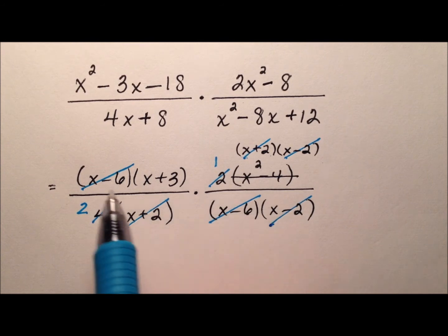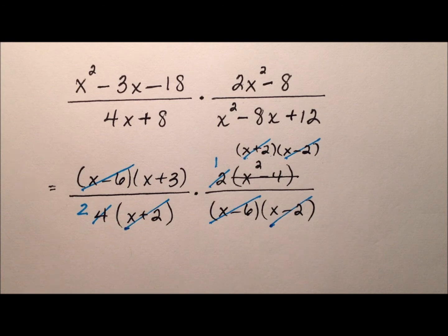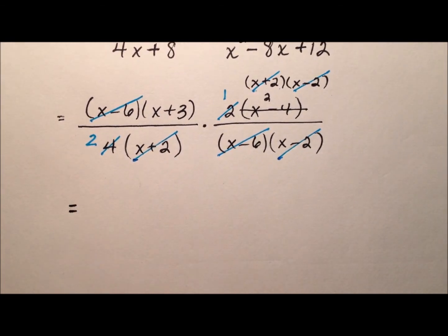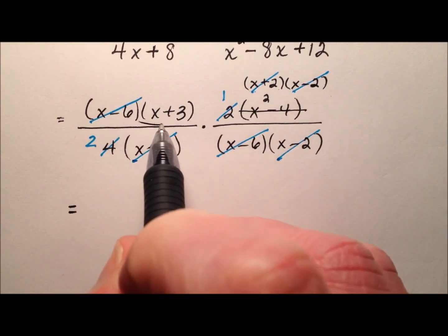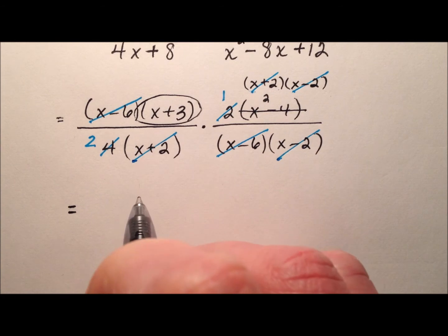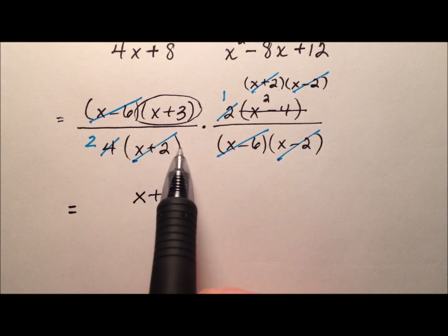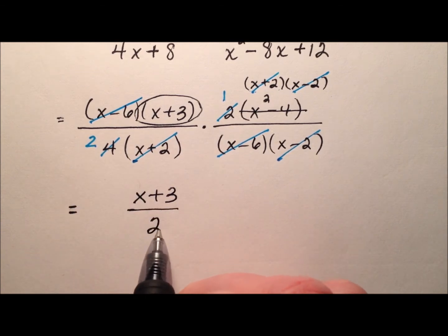So I actually have a lot of factors that canceled out. What do I have now when I go to multiply all this stuff together? Well, the only thing it looks like I have in the numerator still is this x + 3. And the denominator—it looked like everything canceled out except for this 2 right there.